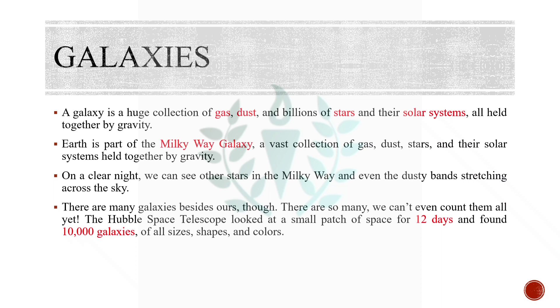There are many galaxies beside ours. Though there are so many, we can't even count them all yet. The Hubble Space Telescope looked at a small patch of space for 12 days and found 10,000 galaxies of all sizes, shapes, and colors. From these figures you can imagine how many galaxies there could be.